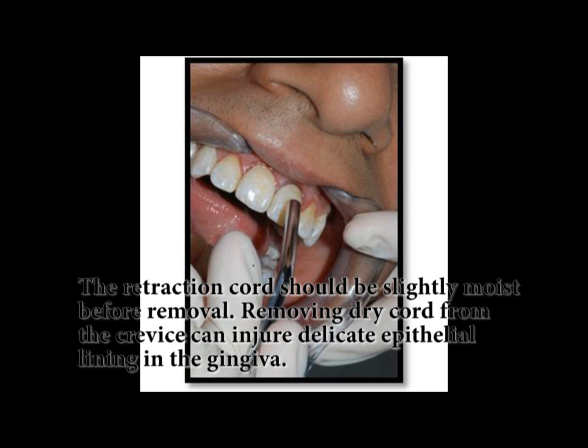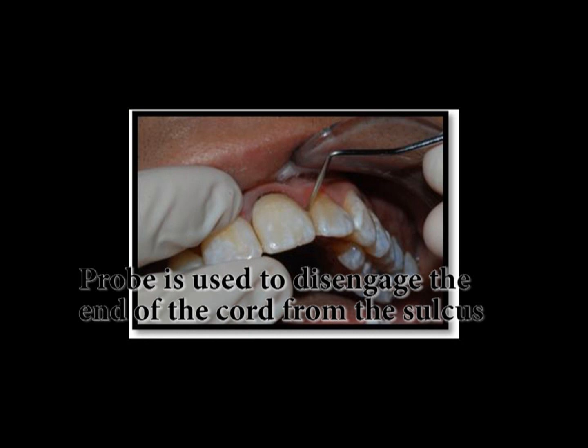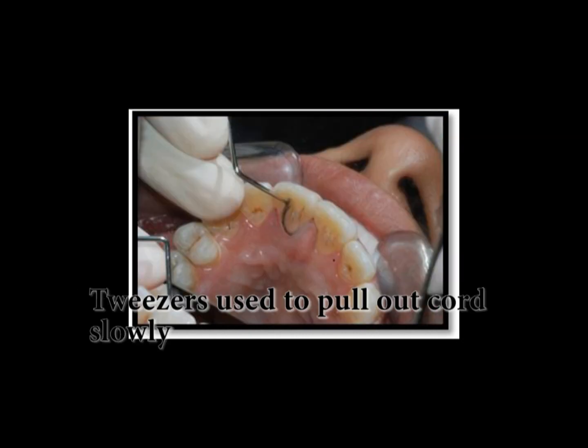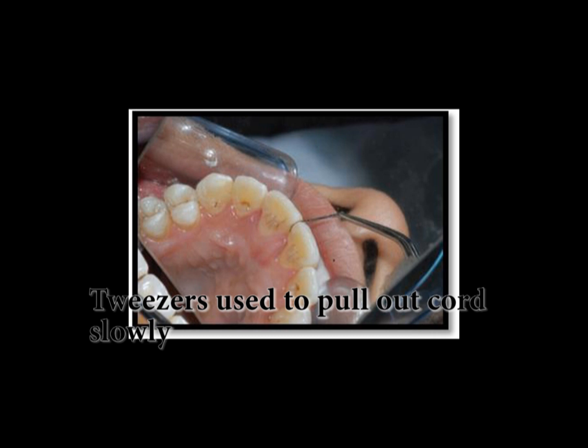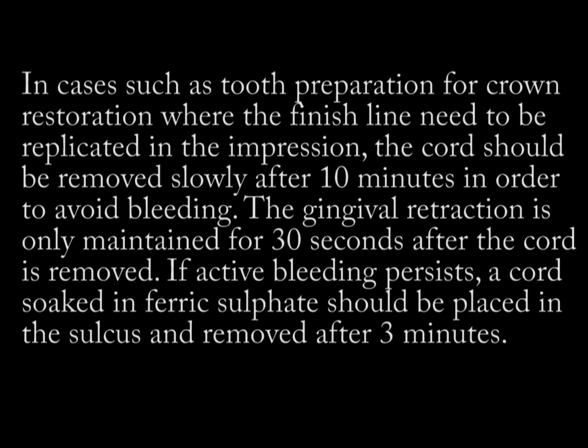The retraction cord should be slightly moist before removal. Removing dry cord from the crevice can injure the delicate epithelial lining of the gingiva. A probe is used to disengage the end of the cord from the sulcus, and tweezers are used to pull out the cord slowly. In cases such as tooth preparation for crown restoration where the finish line needs to be replicated in the impression, the cord should be removed slowly after 10 minutes to avoid bleeding. Gingival retraction is only maintained for 30 seconds after the cord is removed. If active bleeding persists, a cord soaked in ferric sulfate should be placed in the sulcus and removed after 3 minutes.